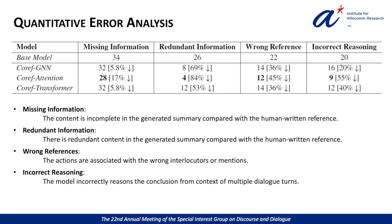To further evaluate the generation quality and the effectiveness of the coreference information for dialogue summarization, we annotated four types of common errors in the automatic summaries. As shown in the table, the three coreference-aware models essentially reduced the redundant information, especially 84% relatively reduced by the coreference-guided attention model, and it also performed best on reducing 45% of wrong reference errors relatively.